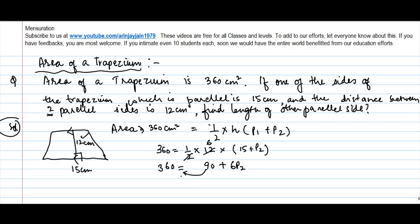Now transposing this to the other side, you get 6 times P2 is equal to 360 minus 90 or 270. Therefore, P2 is equal to how much? Dividing both the sides by 6, 45. The length of the other side is 45 centimeter.